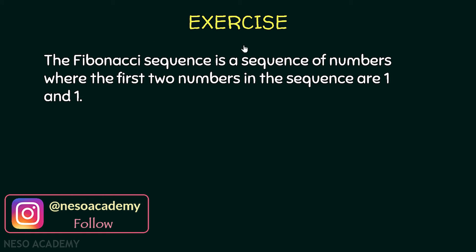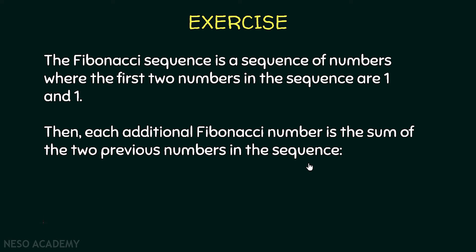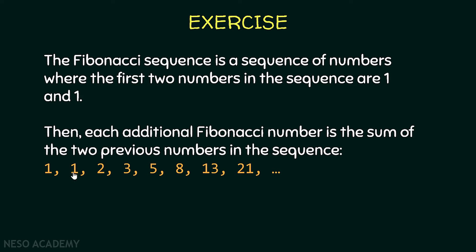The Fibonacci sequence is a sequence of numbers where the first two numbers in the sequence are 1 and 1. Each additional Fibonacci number is the sum of the two previous numbers. So the sequence looks like this: the first two numbers are 1 and 1, then 1+1=2, then 1+2=3, then 2+3=5, and 3+5=8, and so on.